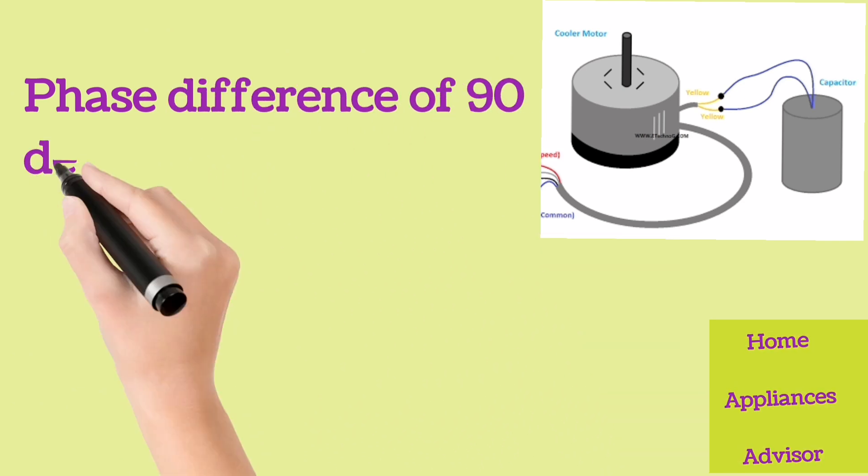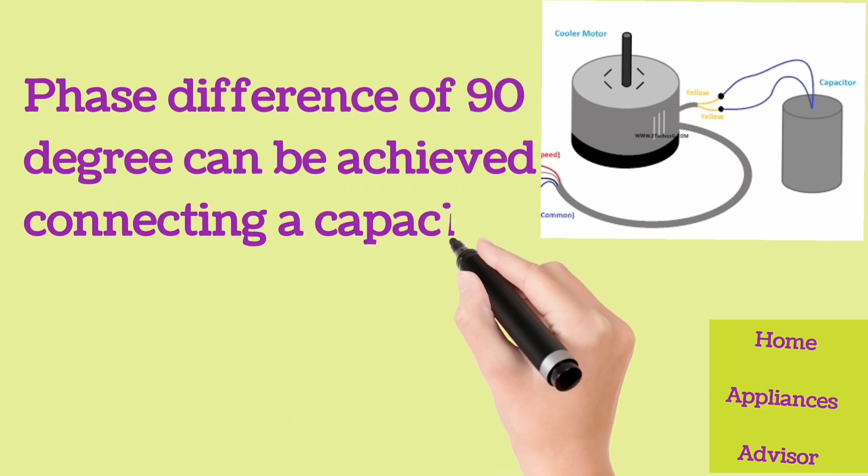Phase difference of 90 degrees can be achieved by connecting a capacitor in series with the starting winding.